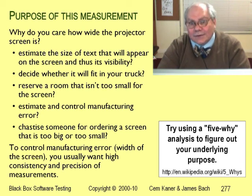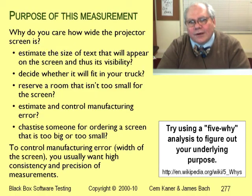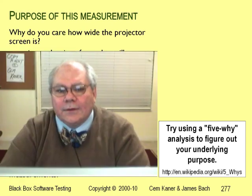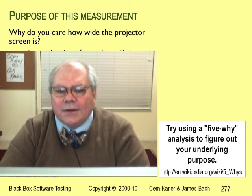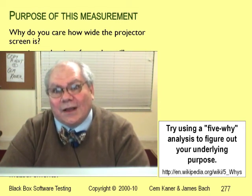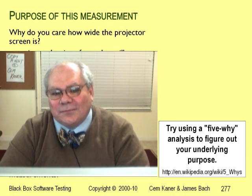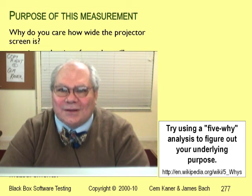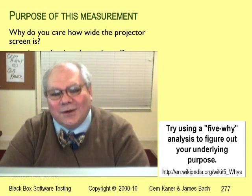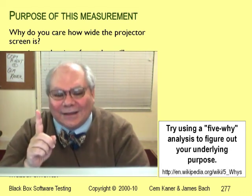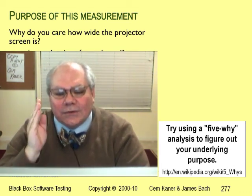Figuring out why you are taking this measurement is a much harder question. Why do you want to know the width of this projector screen? Why do you care what the quality of this product is? Asking about your purpose often leads you to realize that you don't actually care about the attribute you think you're measuring — you're actually trying to find out about something else. For example, suppose you were trying to figure out whether people could read the text on your slides. You start by asking how wide is this screen, but then ask why you want to know that. The answer: you want to estimate how big the letters will be when you project your slides. Then you ask why you want to know that. Your answer: you want to know whether people can read your slides. That's a very different question, and knowing the screen width might not answer it.